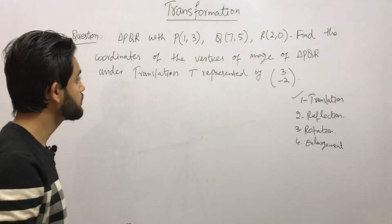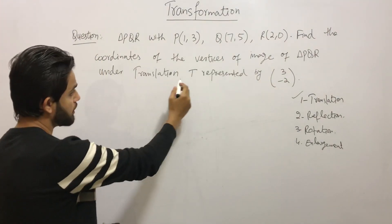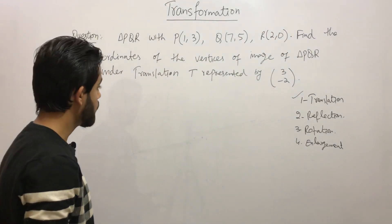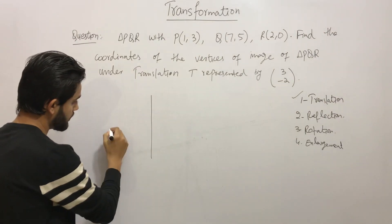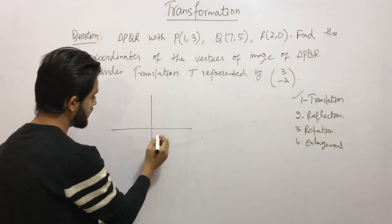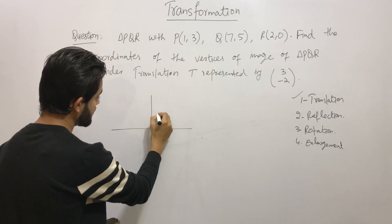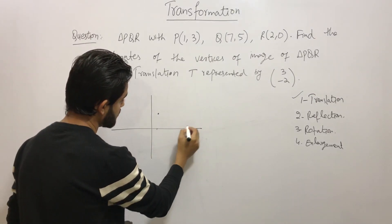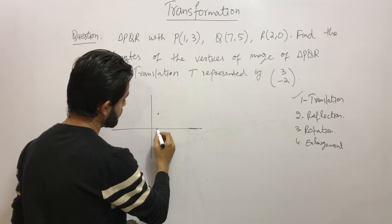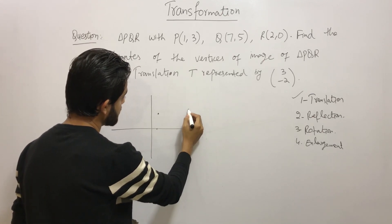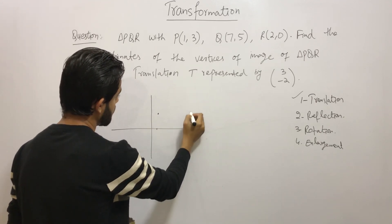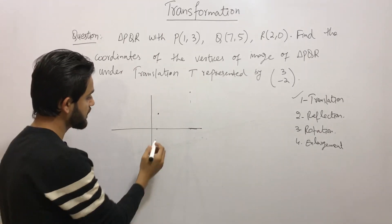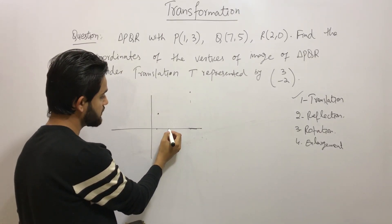The question says: a triangle PQR with coordinates P(1, 3), Q(7, 5), and R(2, 0). Find the coordinates of the vertices of the image of triangle PQR under translation T represented by (3, -2). So let's draw these points. P is at x=1, y=3. Q is at x=7, y=5. R is at x=2, y=0.